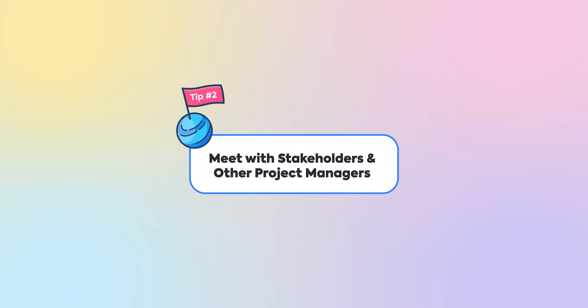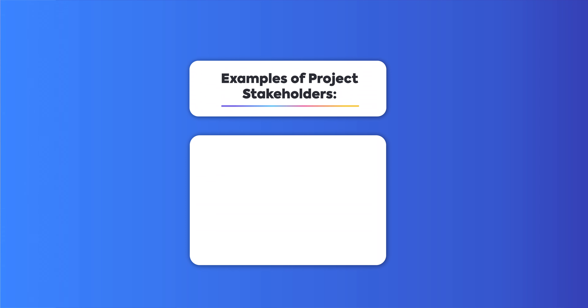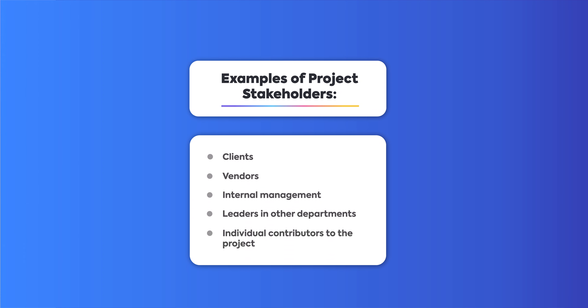Number two: meet with stakeholders and other project managers. These are the people personally invested in the progress and the end results of the project. They have expectations for the project planning methods, and it's your job as a project manager to meet with them. Some examples of project stakeholders are clients, vendors, internal management, leaders in other departments, and individual contributors to the project. If you want to learn more about project stakeholders, you can check out our previous video on that — just check out the link in the description below.